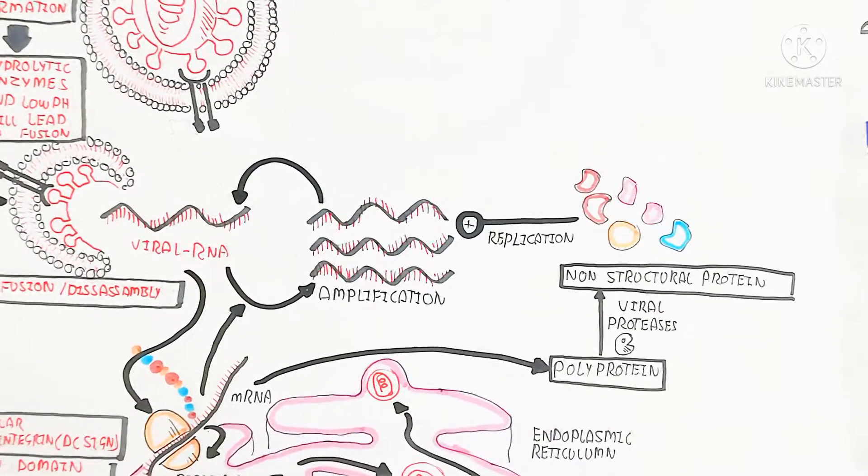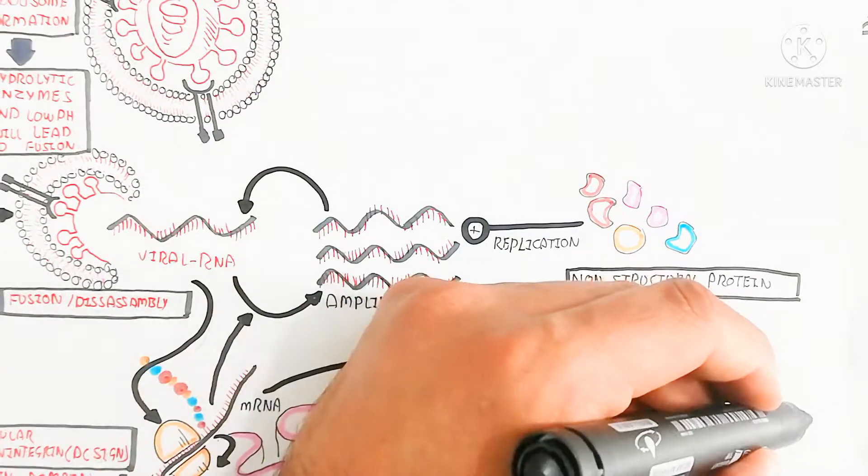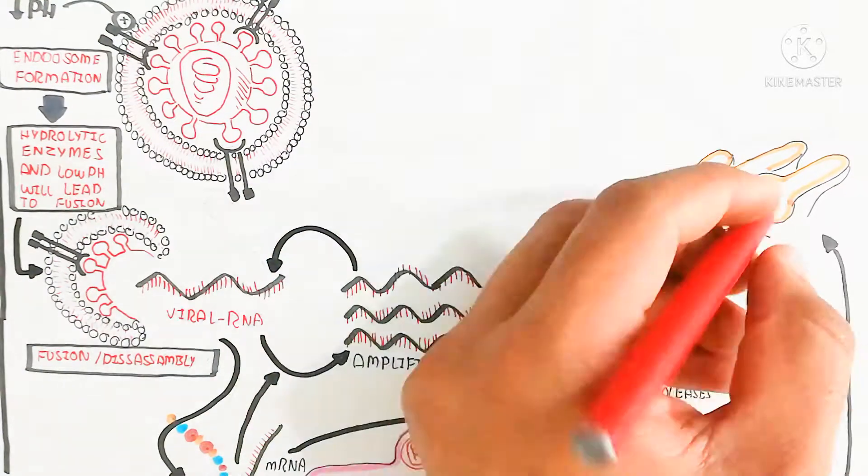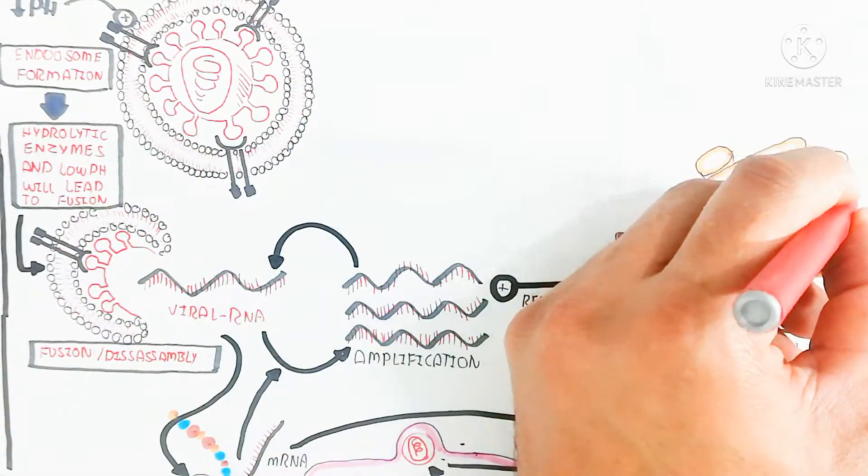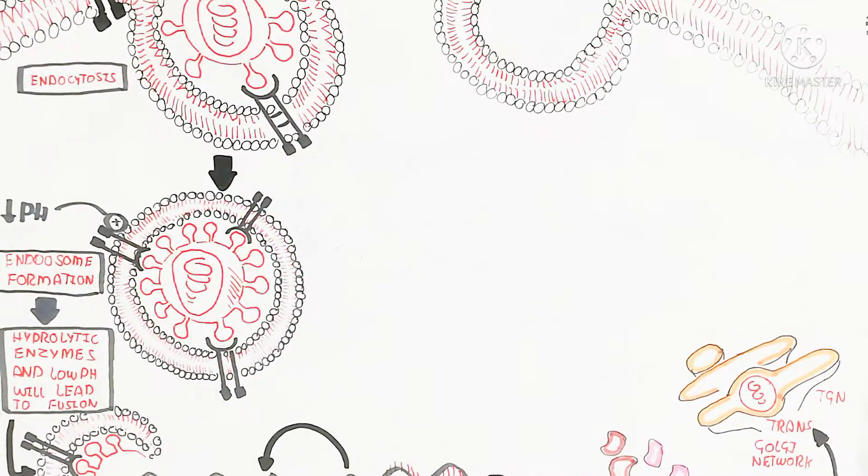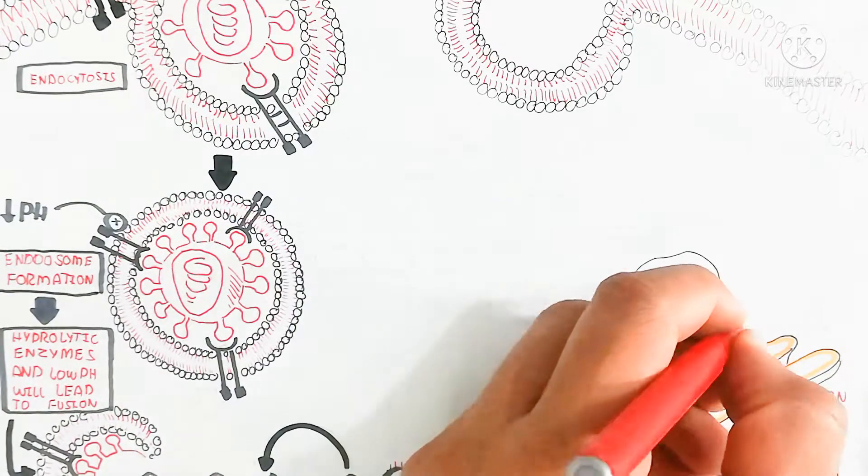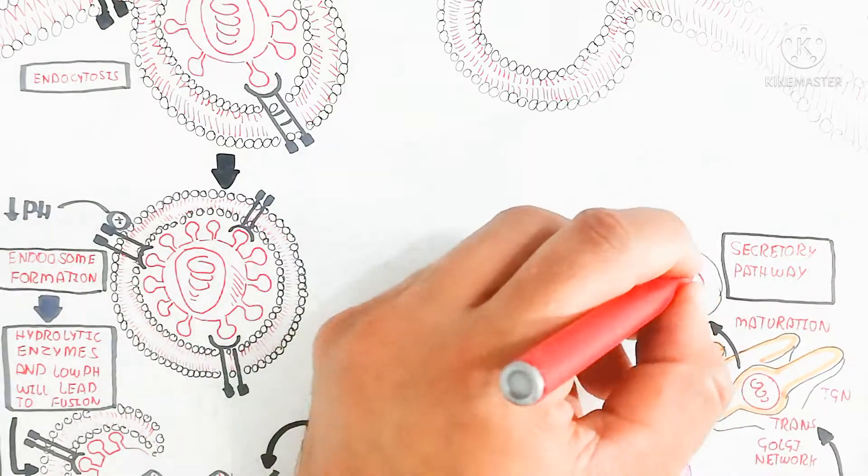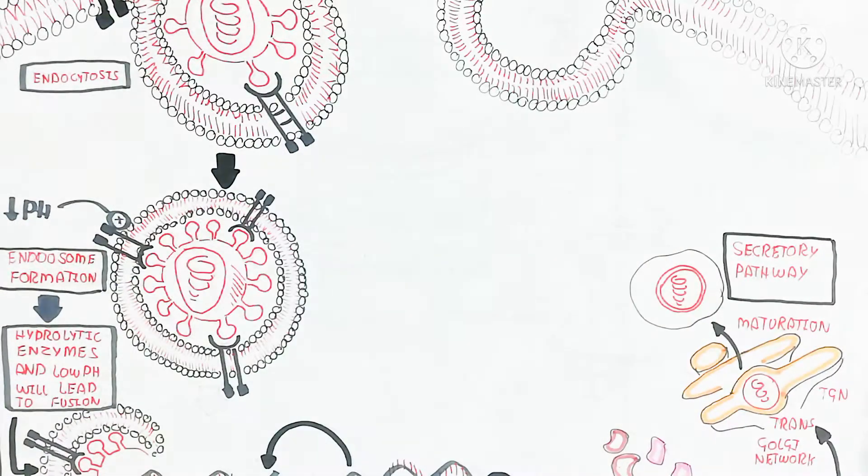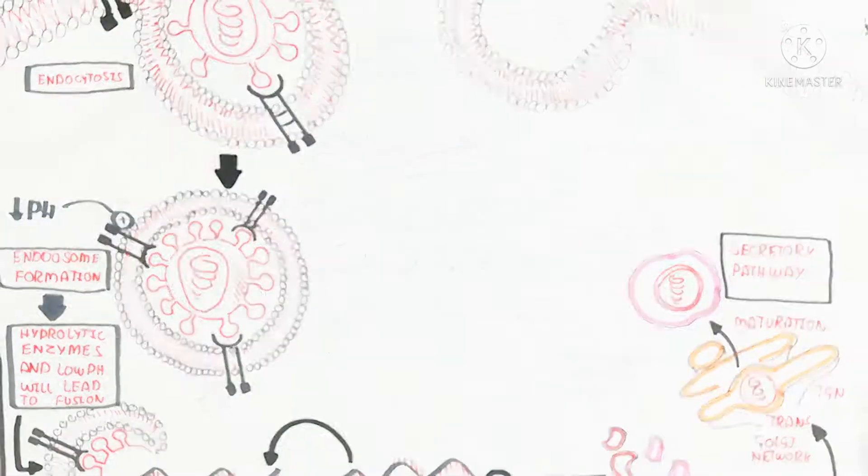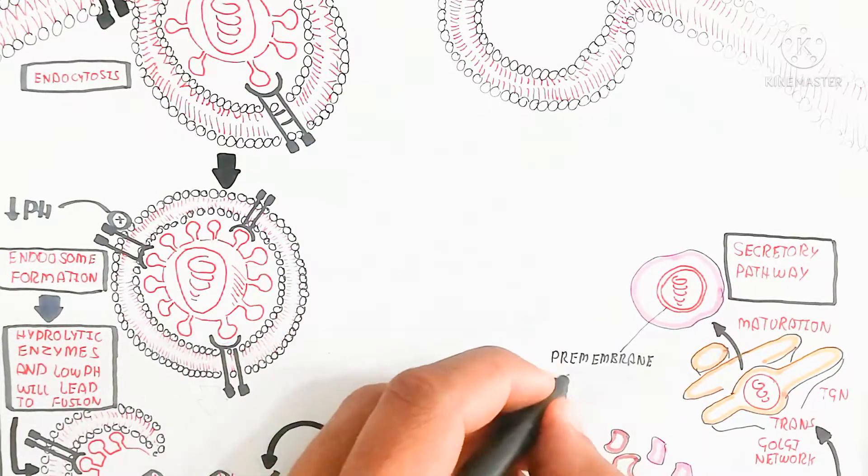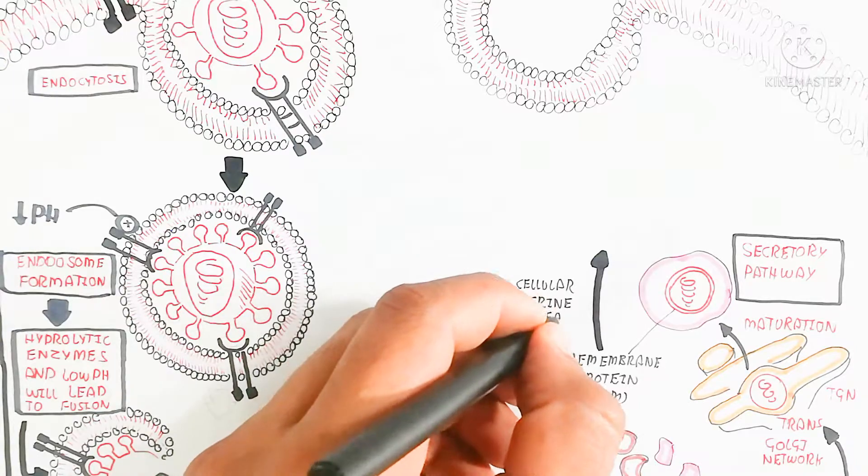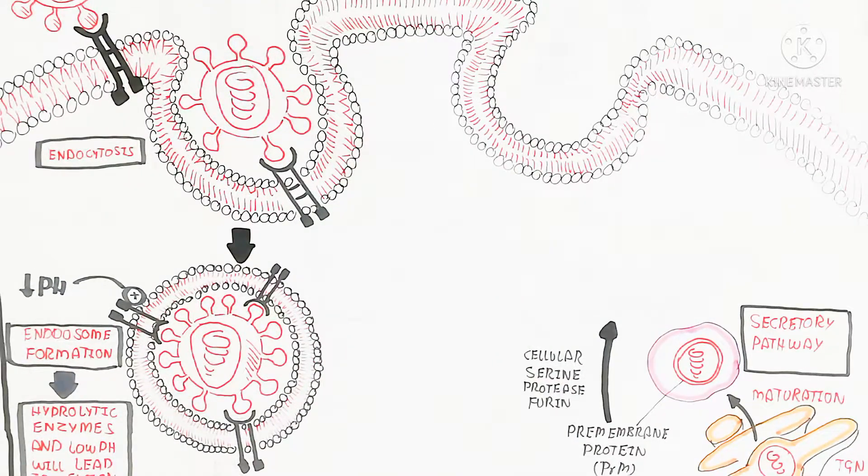Here is the endoplasmic reticulum with immature polyprotein. This immature polyprotein goes to the trans-Golgi network. Maturation occurs in the trans-Golgi network. Maturation means the pre-membrane protein, which is produced from the PRM segment of the viral RNA. The secretory pathway occurs. We will later discuss the segments of the RNA, which is 11KB.